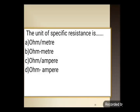Next question: the unit of specific resistance is — option A: ohm per meter, option B: ohm meter, option C: ohm per ampere. The correct unit of specific resistance is ohm meter. Option B is the correct answer.